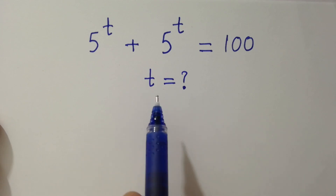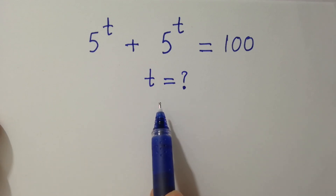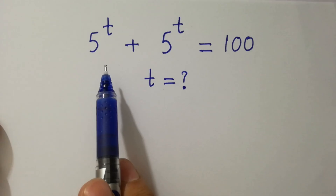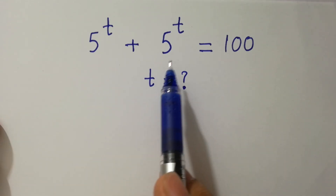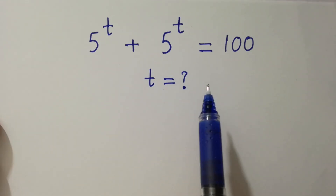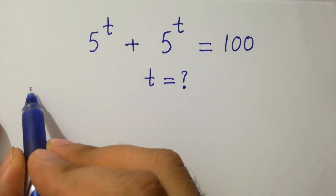Hello friends, find the value of t if 5 to the power t plus 5 to the power t equals 100. Let's have a solution.